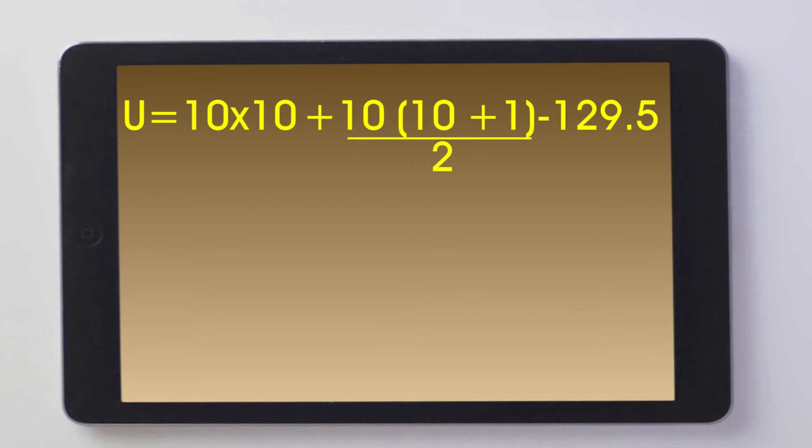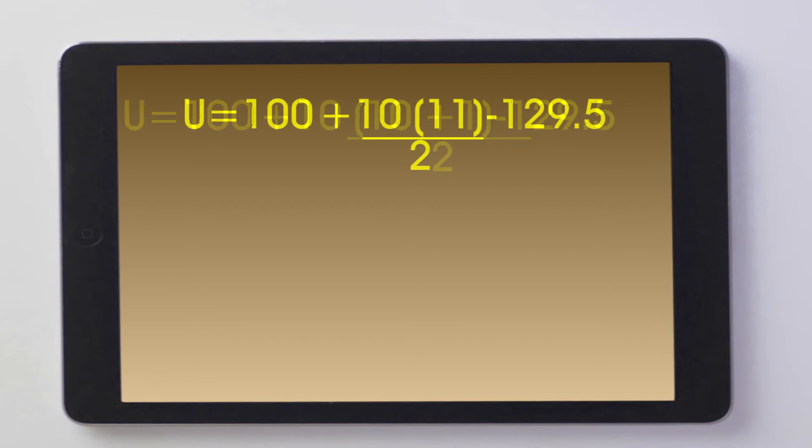Breaking our formula down: 10 times 10 is 100. 10 plus 1 is 11, times 10 is 110, that's still going to be divided by 2, minus 129.5. This gives us 155 minus 129.5. So our first U value is 25.5.